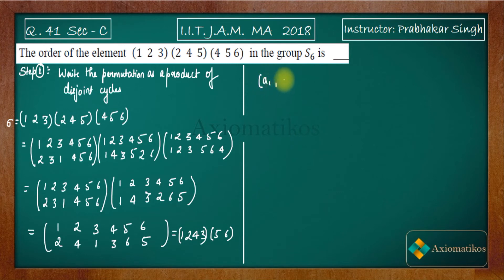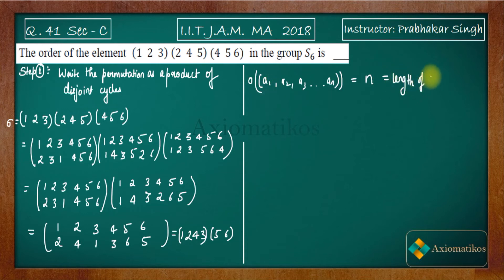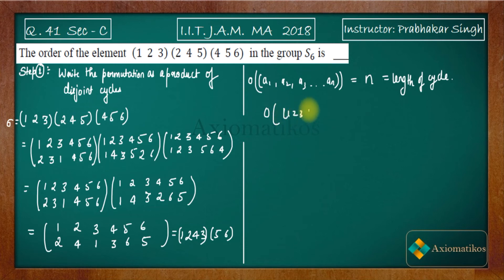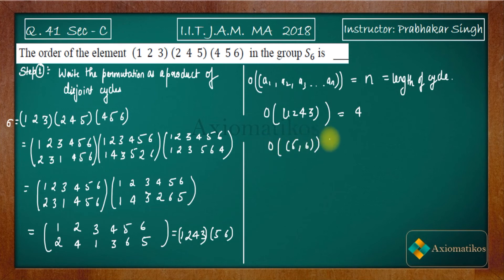There are two key notes. First, the order of a single cycle is equal to the length of the cycle. Second, the order of a product of disjoint cycles is the LCM of the orders of each individual cycle. So the order of cycle (1 2 4 3) is four, and the order of cycle (5 6) is two.